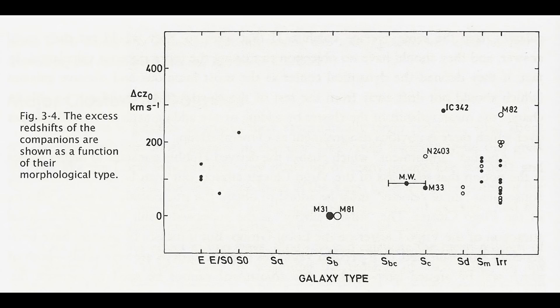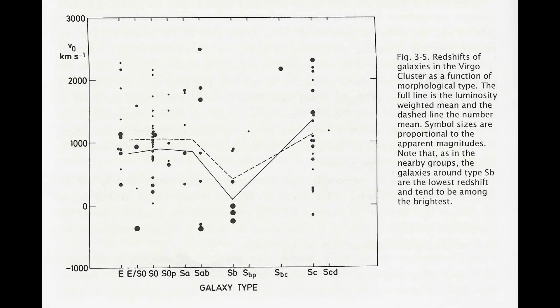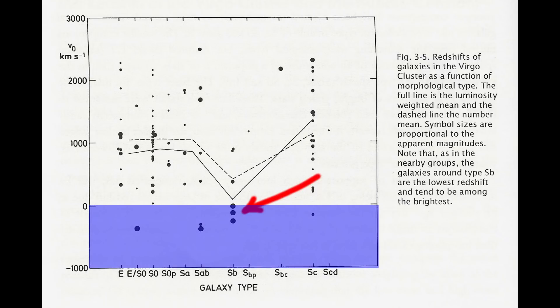This pattern is also evident when we examine the same chart for the Virgo cluster. More interesting in the Virgo diagram is that we see these barred spiral galaxies not only have the lowest redshift but it is actually negative. In other words blue shifted.